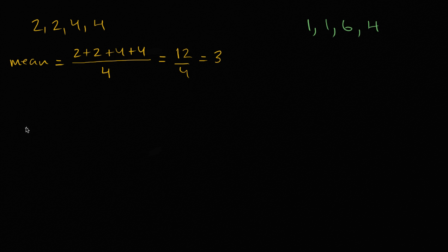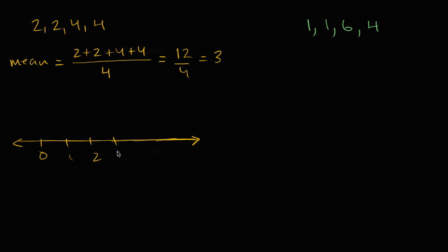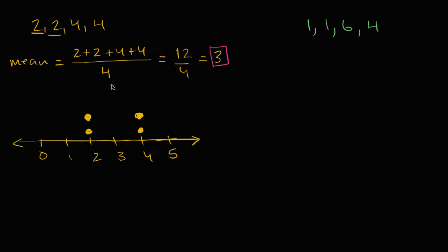Let's visualize this on a number line with a dot plot so we can see all the values. On a number line from zero to five, we have two twos and two fours. We calculated that the mean is three, so I'll mark that with a dotted line. That does look like it's the center — it makes sense.